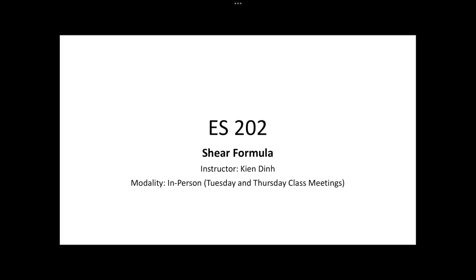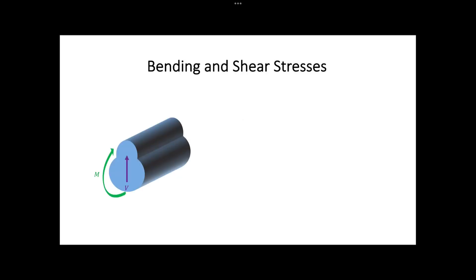In this lecture, we are going to study the formula to determine the transverse and longitudinal shear stress in stress members subjected to bending. Assume we know the shear force V and the bending moment M at a cross-section of a beam. We are interested in finding the state of stress at a point on the cross-section, where sigma is the normal or bending stress caused by the bending moment and tau is the transverse shear stress caused by the shear force V.